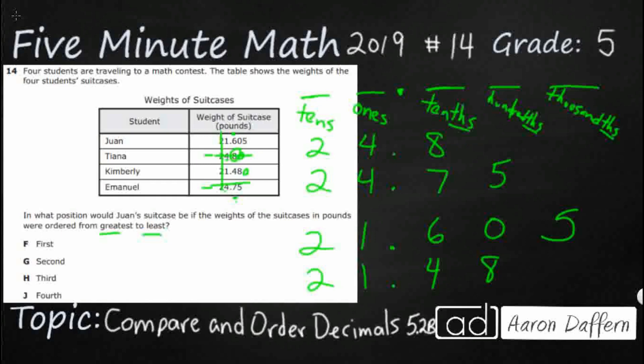So it looks like Wan's suitcase — twenty-one point six-oh-five — is in third position. That is first, second, third, fourth.